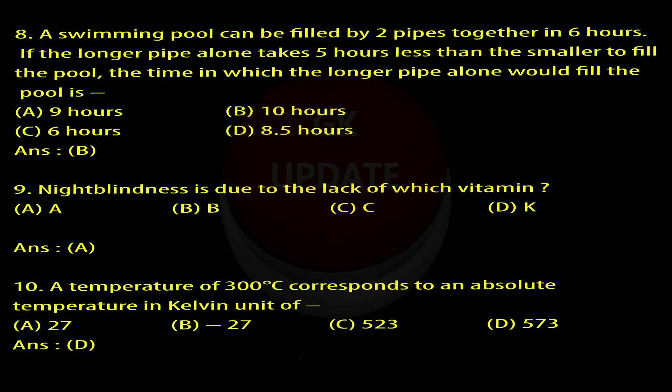Question 10: A temperature of 300 degrees Celsius corresponds to an absolute temperature in Kelvin of: A. 27, B. 27, C. 523, D. 573. Answer: D.